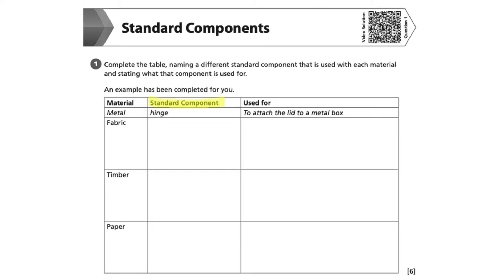If you weren't quite sure what a standard component is, the example may give you a clue. Think about a hinge and consider what makes it a standard component. A hinge is a common component used on a number of products in addition to lids, such as doors and cupboards. This may jog our memory into remembering that a standard component is a component that is mass produced in standard sizes for use in a variety of products.